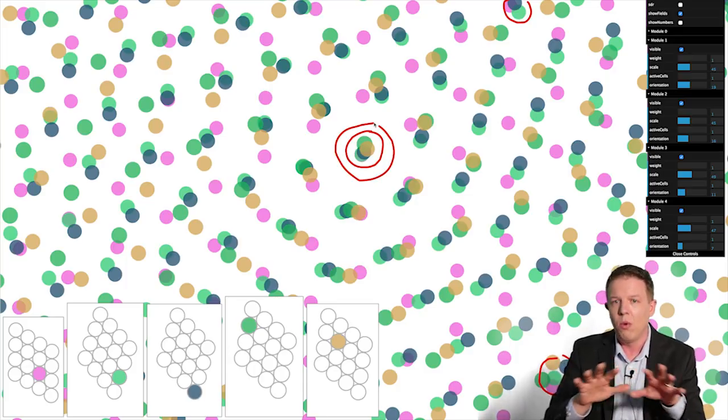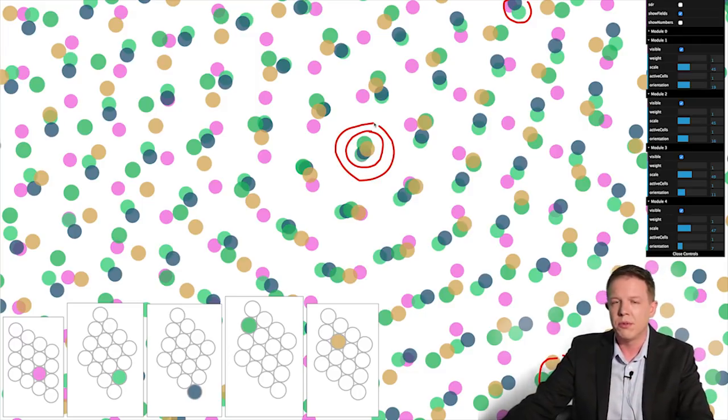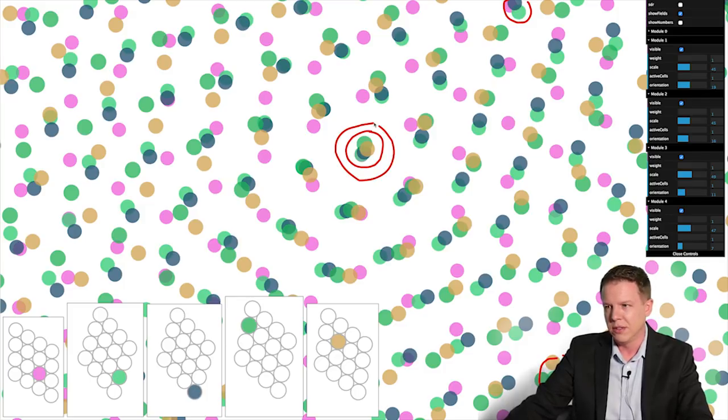So if we add more modules, we'll get better resolution on our locations and we can represent more unique spaces in this way.